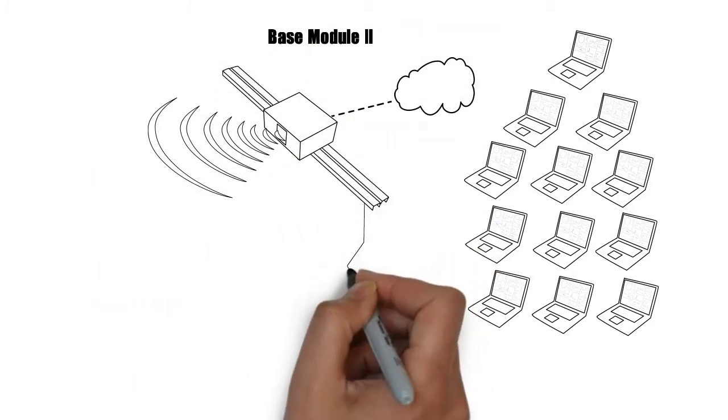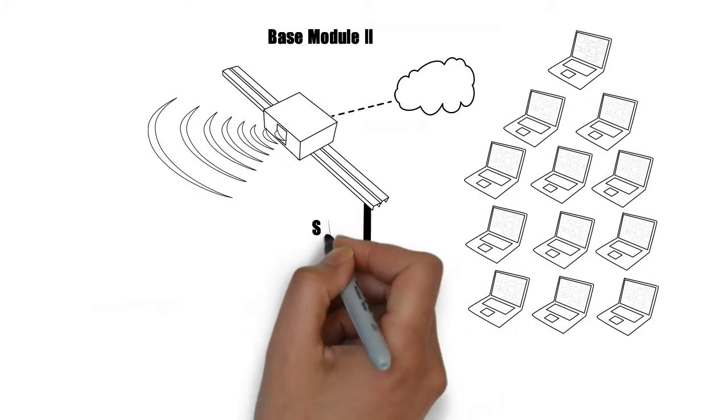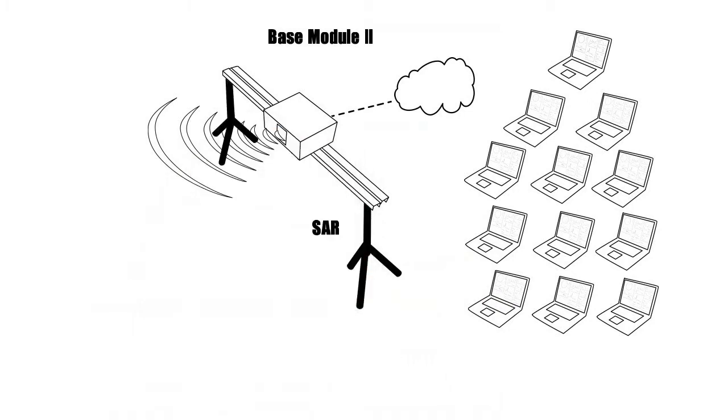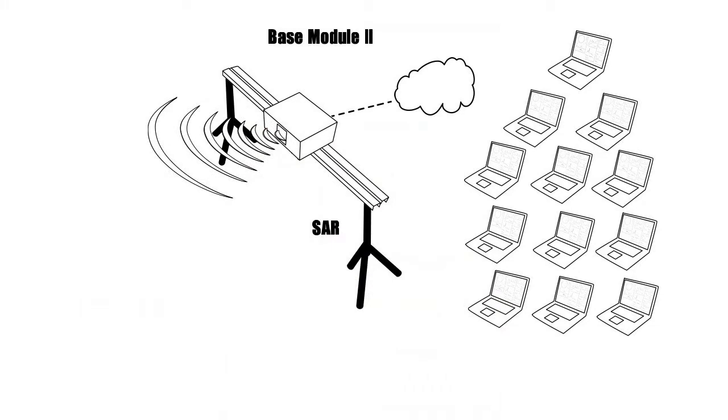If you replace the rotary tripod by the linear SAR axis, the base module can make linear movements with the radar and create high-resolution images, e.g. of bicycles or any other object, just like a side-lobe airborne radar would do it.